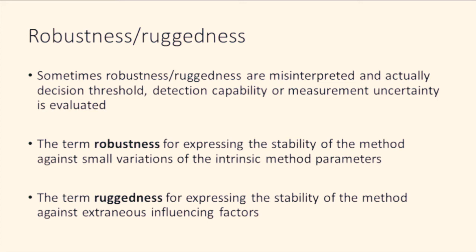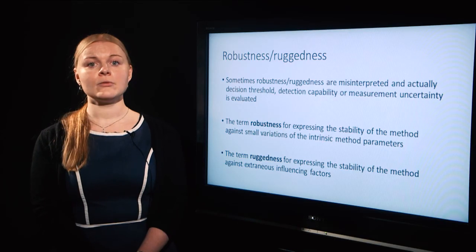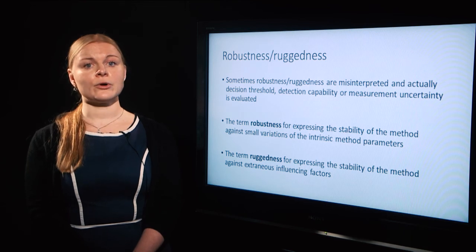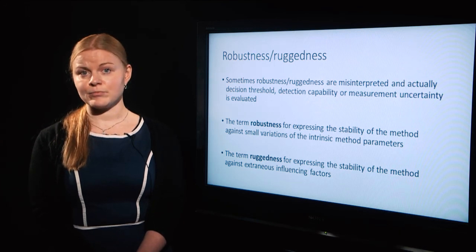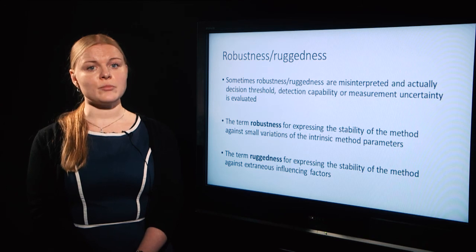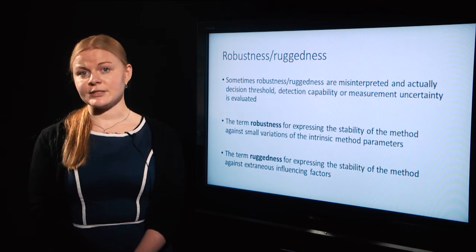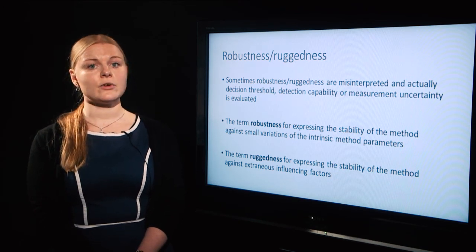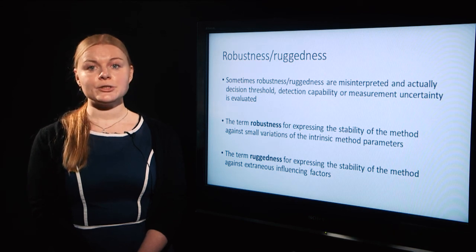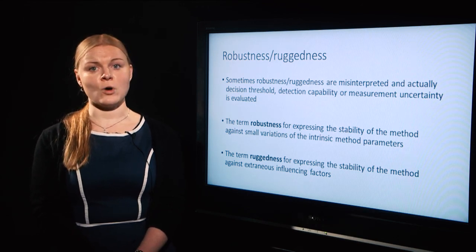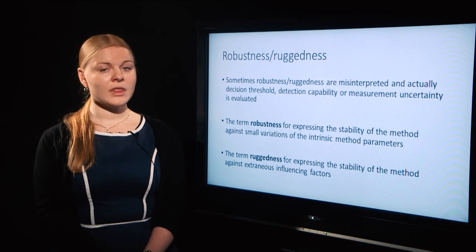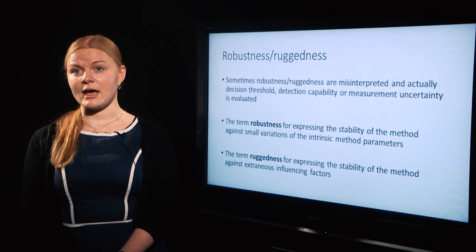In this course we use the term robustness for expressing the stability of a method against small variations of the intrinsic method parameters, and the term ruggedness for expressing the stability of a method against extraneous influencing factors. We address changes of the method parameters meaning within-laboratory assessment of robustness and variability of a sample matrix. We do not explicitly address the changes occurring when a method is transferred from one laboratory to another. This was the short introduction to robustness and ruggedness.